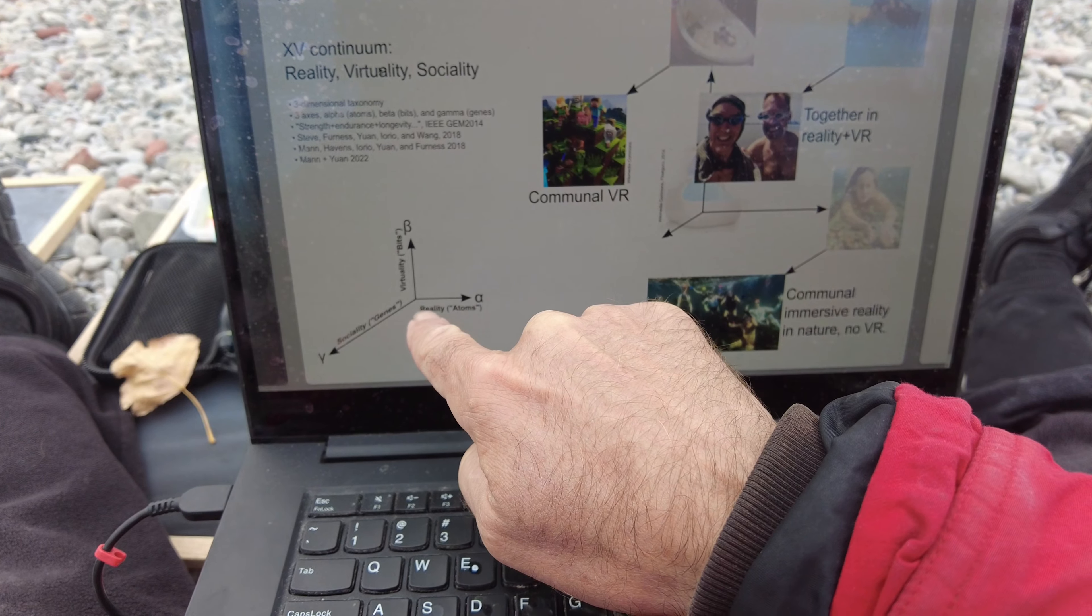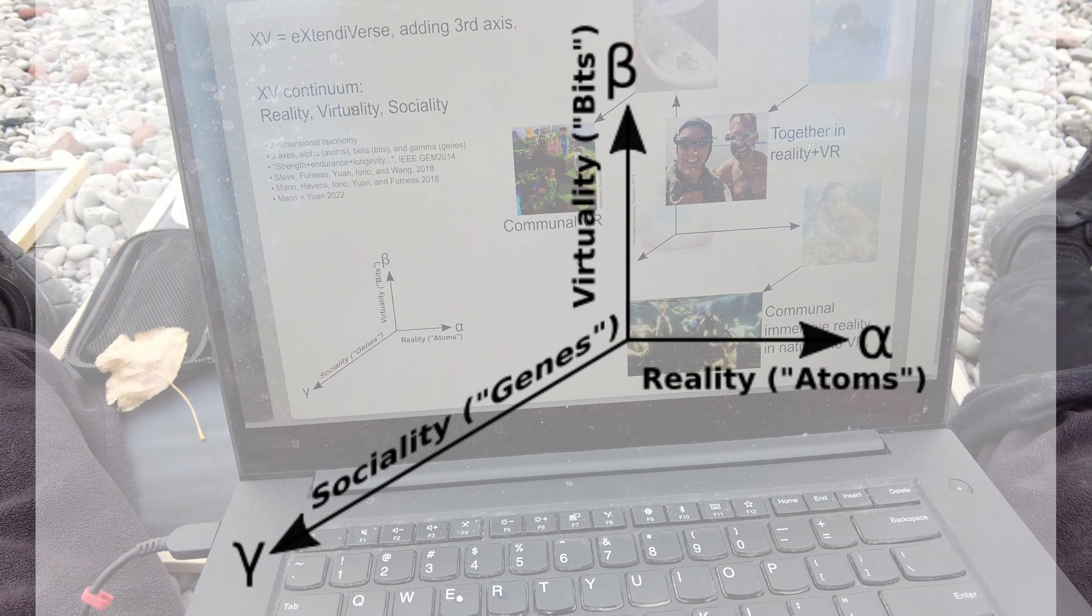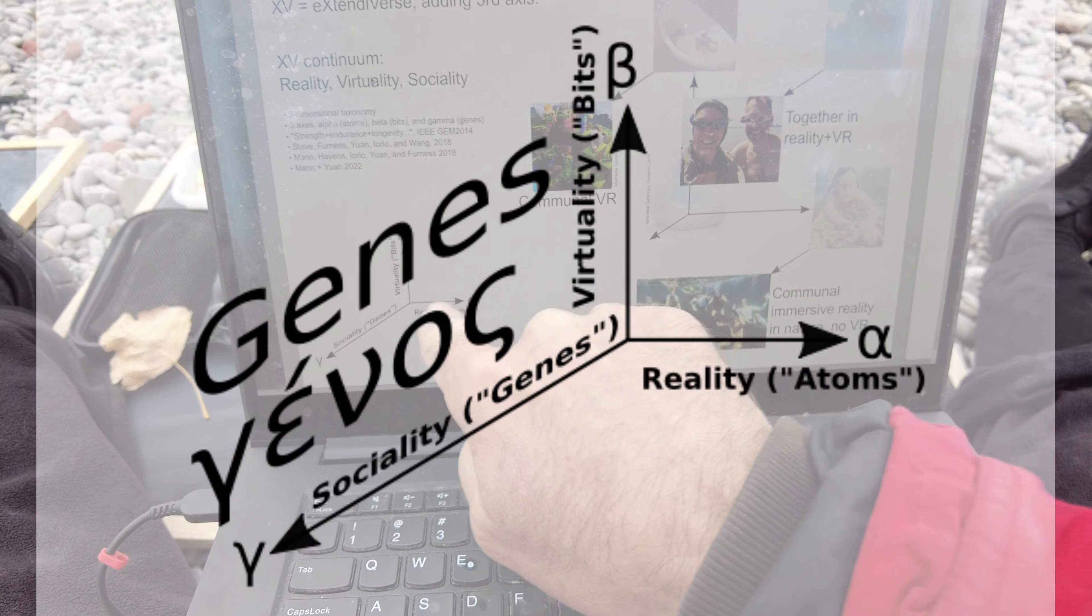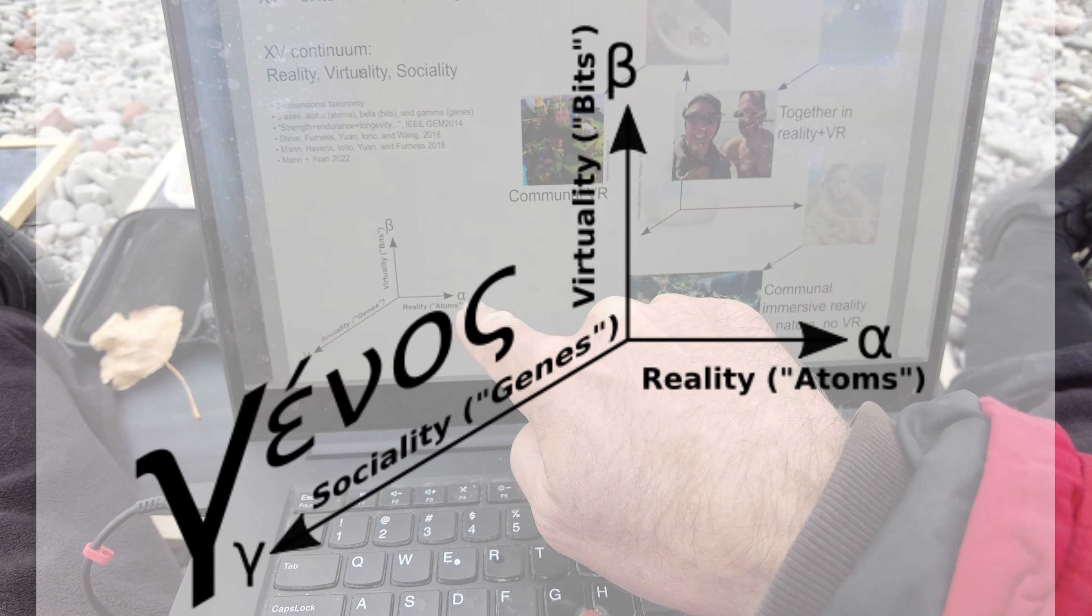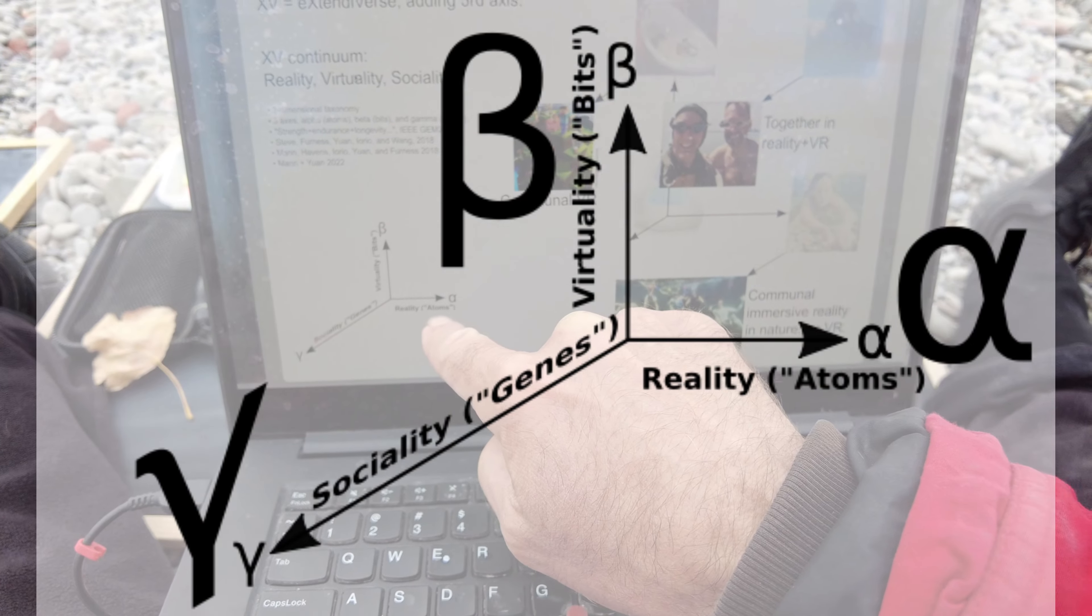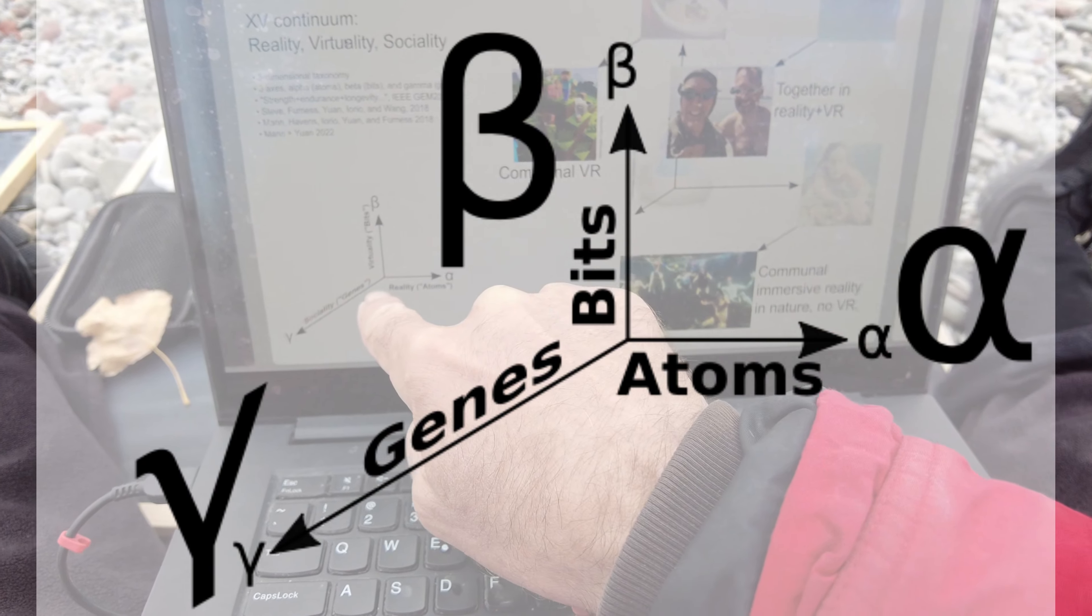Now within this taxonomy, let's introduce a third axis, the social axis. Whereas when we're near the origins we have atoms, bits, here we have genes, maybe the smallest unit of humanness. Genes is a Greek word also that starts with a third letter of the Greek alphabet, gamma. So let's label these axes alpha, beta and gamma.